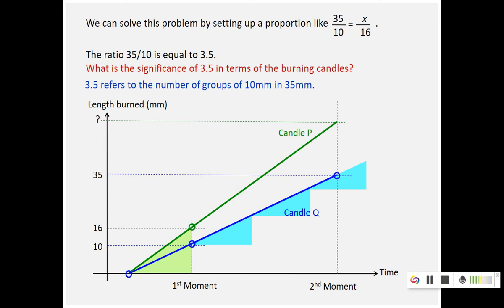Likewise, because they are burning at the same time interval, P also have 3.5 groups, but it's 3.5 groups of 16 now. So 16, another 16, another 16, and 3.5 groups of 16 will give you the answer. All right, with that, that's all I have to share for this video. Thank you.